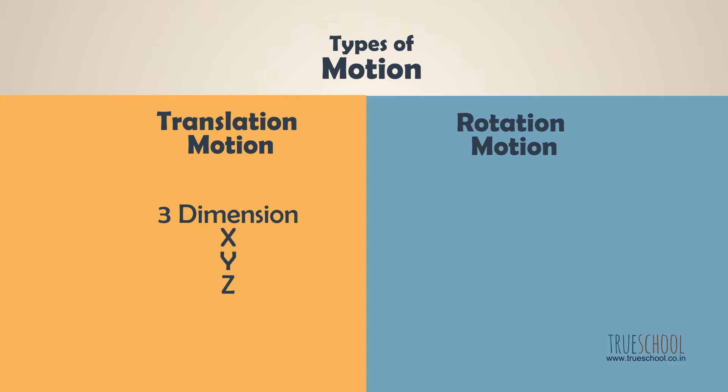All types of motion we can think of are combinations of these two types of motion. A car moving on a road is undergoing translation motion, but if you look closer, its wheel is undergoing a combination of rotation and translation.